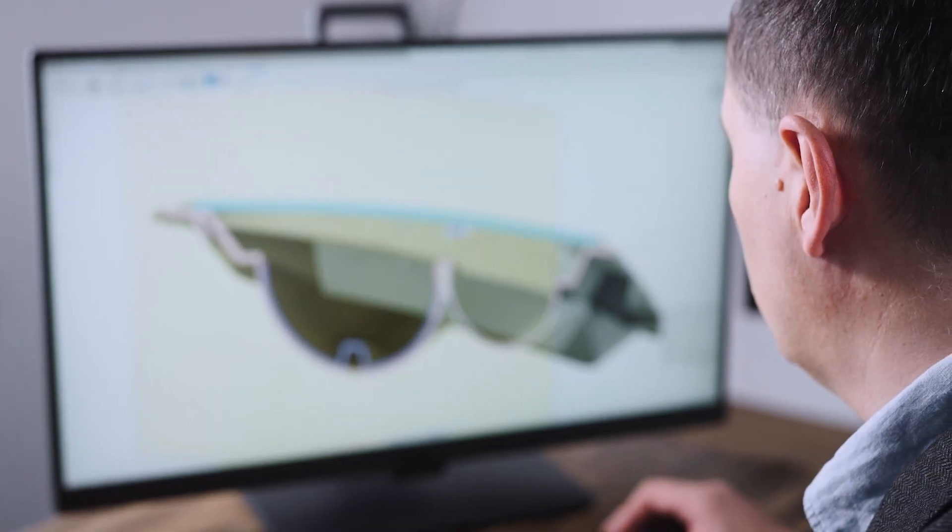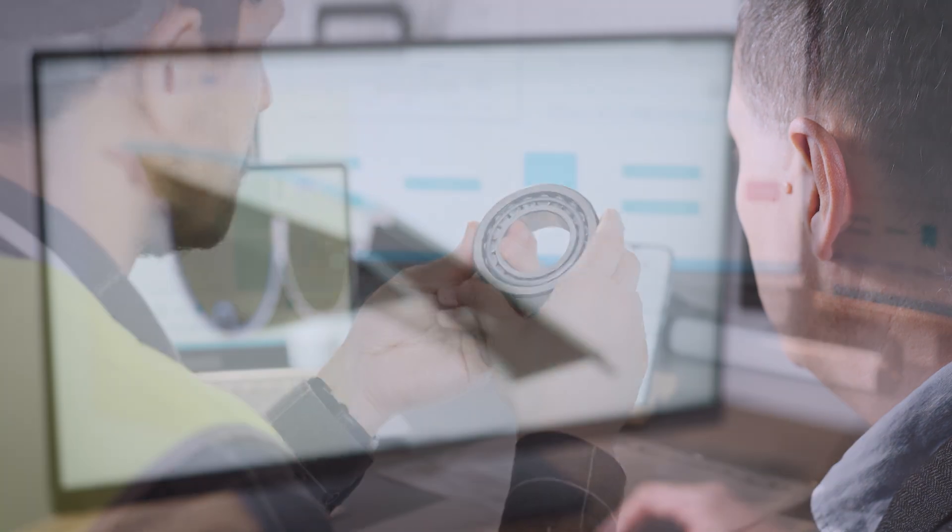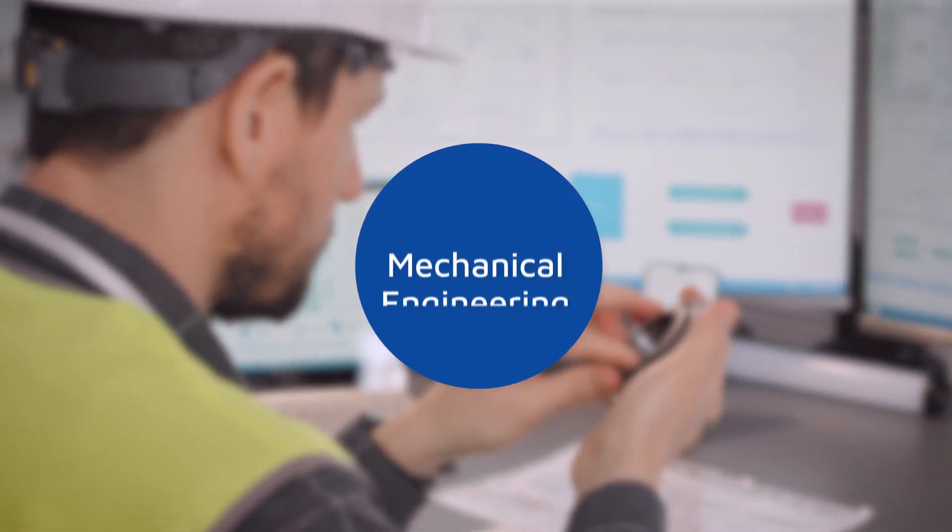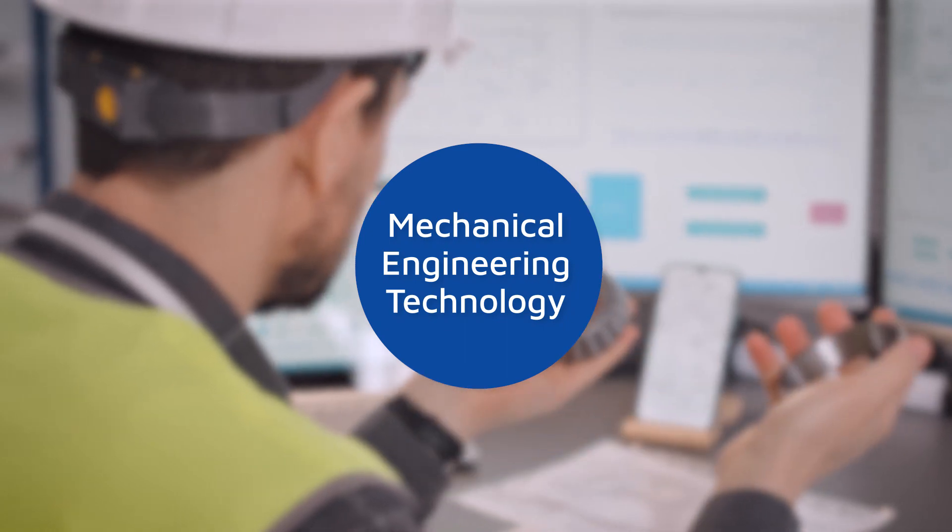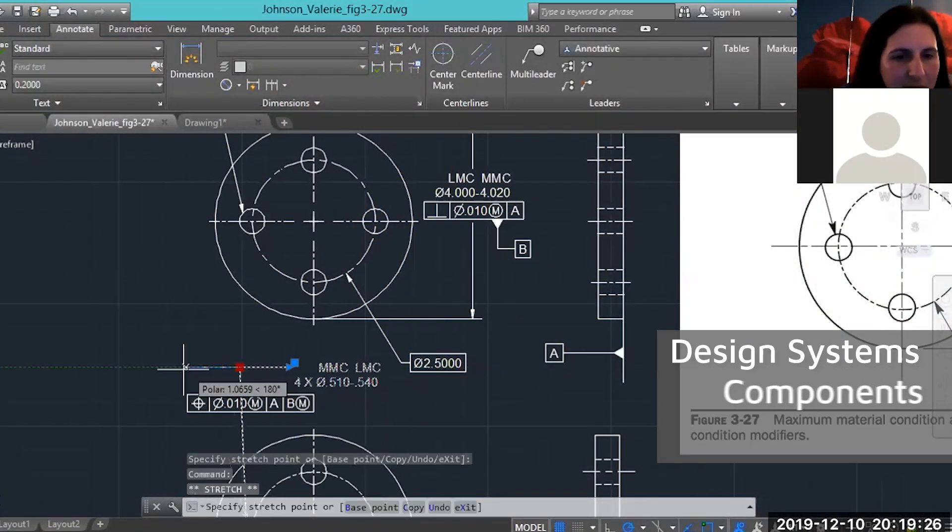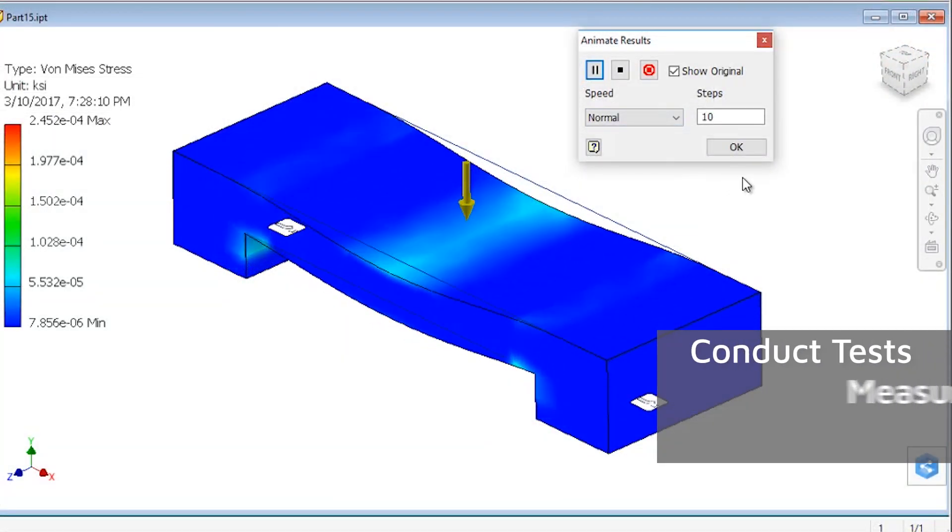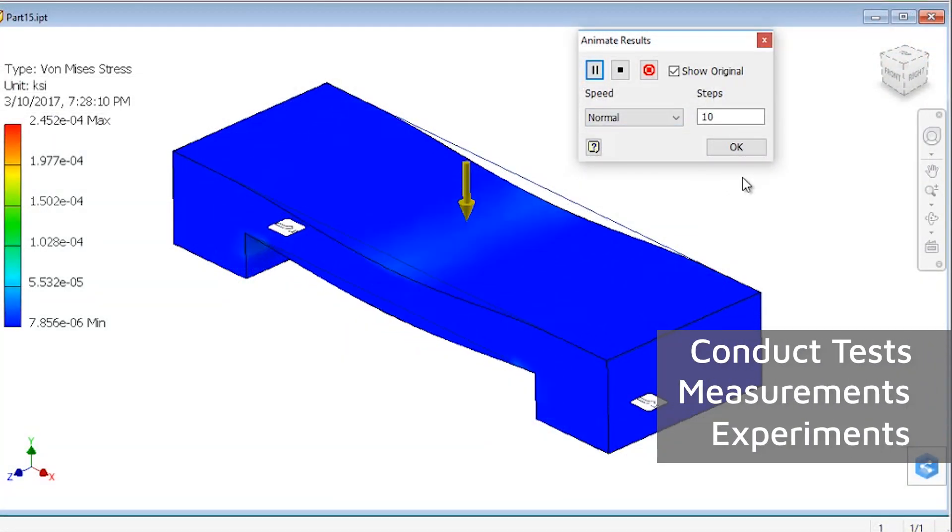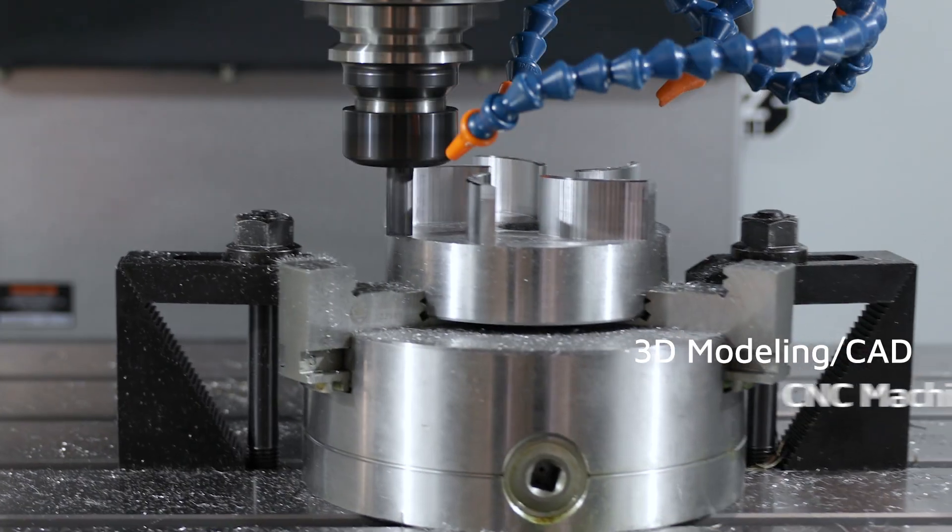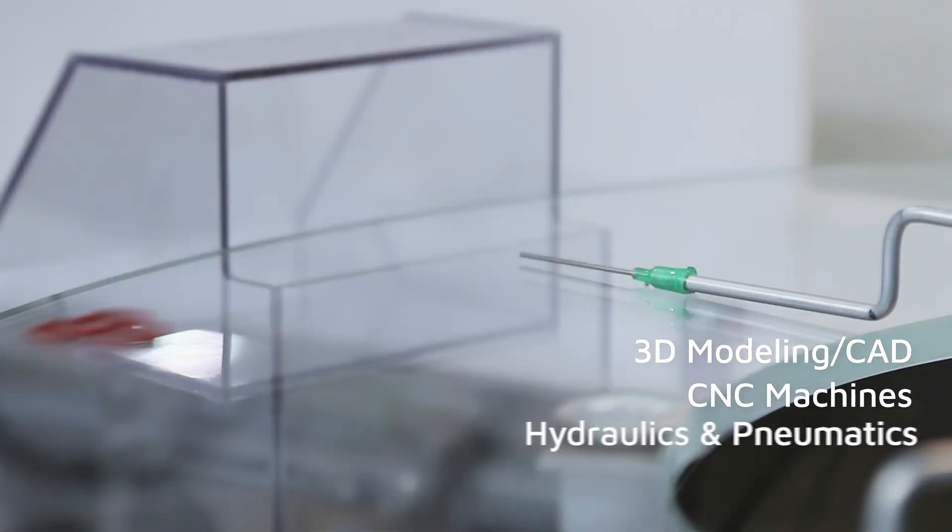If you're interested in a career in mechanical design, testing, manufacturing, or operations, then our Bachelor of Science in Mechanical Engineering Technology might be right for you. In the MET program, you will design systems, components, and processes, and then learn how to conduct tests, measurements, and experiments using modern engineering technology tools, such as 3D modeling with CAD, CNC machining, hydraulic and pneumatic systems, and much more.